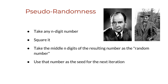The procedure is very simple: first you take any n-digit number, then you square it, then take the middle n digits of the resulting number as the random number, and use that number as the seed for the next iteration.